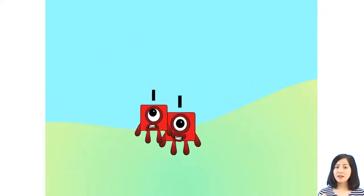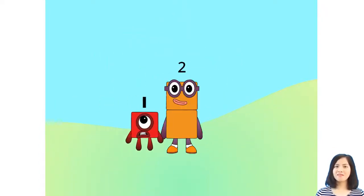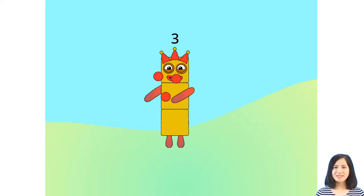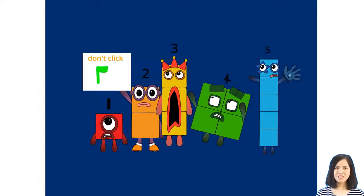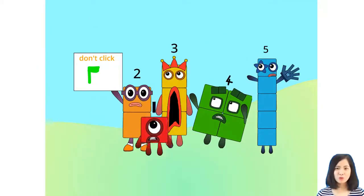One, and another one is two, and another one is me. That's three, five, four, three, two, one. Time for some number fun. You can count on us with a number block.